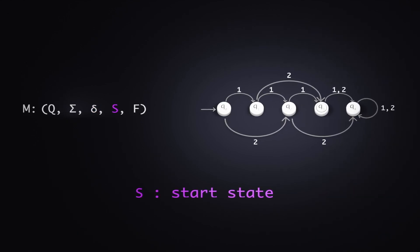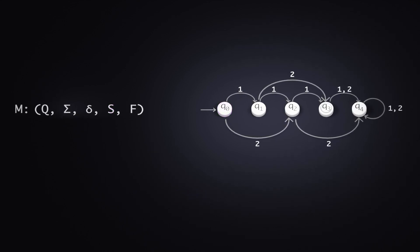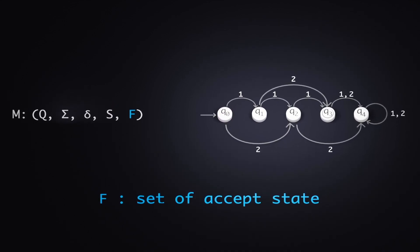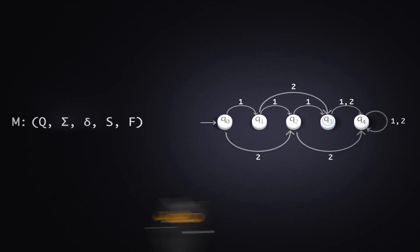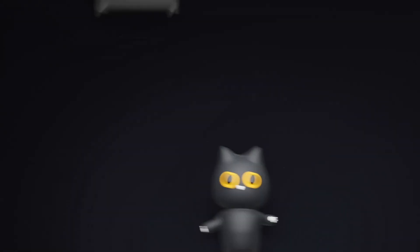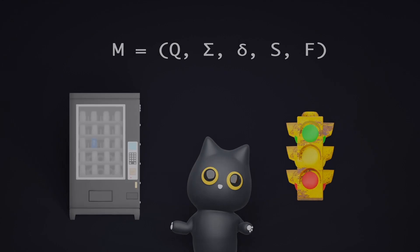Moving on, we have our start state here, which is just Q0. And finally, we have the set of accept states, which contains just Q3. Fantastic! At this point, we have seen real-life examples of DFAs and topped it off with a formal definition.